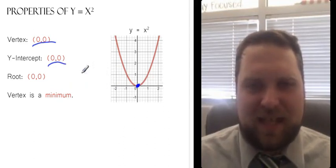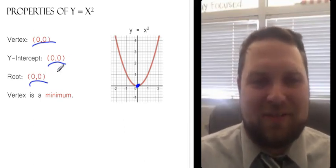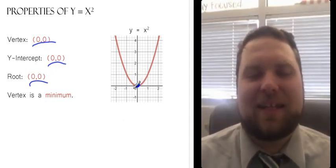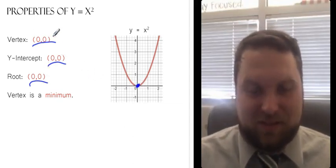Well, where does it touch the x-axis? Well, at the vertex. It only has one root at (0, 0). So the vertex, y-intercept, and root are all at (0, 0) at the origin. So you can see why we call this the simplest quadratic possible.